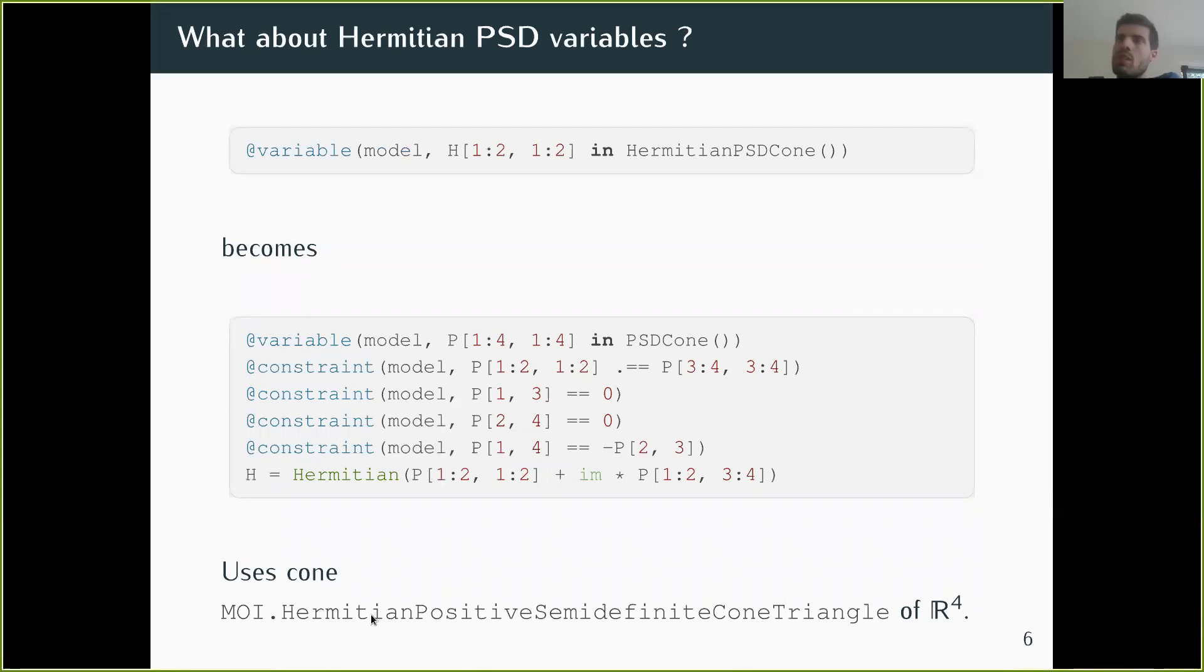What do we do for Hermitian PSD matrices? It's the same. When you create a Hermitian matrix H, the matrix is Hermitian, so on the diagonal you know there are only two real entries, and on the off-diagonal you have a real and a complex entry. This is parametrized by four real variables: two for the diagonal and two for the single off-diagonal entry. We create four real variables in a cone in the solver interface, and this cone has dimension four. When the user creates this, we create these four variables in this real cone, then compose this matrix with these real variables.